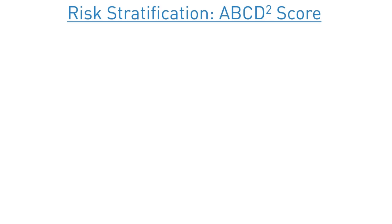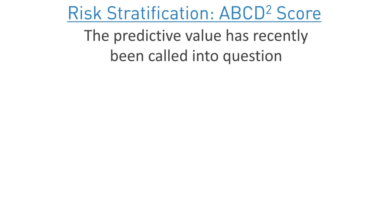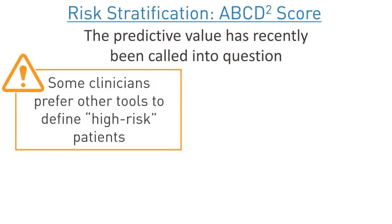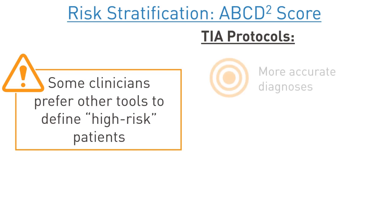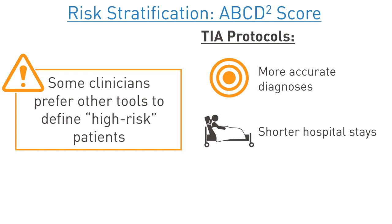One note of caution: the predictive value of the ABCD2 has recently been called into question, and thus some clinicians prefer other tools to define high-risk patients. Regardless of which tool you select, implementation of a TIA protocol to risk stratify patients for appropriate workup has resulted in more accurate diagnoses of TIA, shorter hospital stays, and lower costs without worsening clinical outcomes.